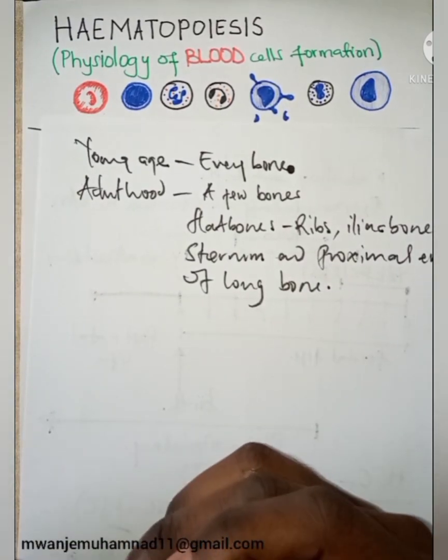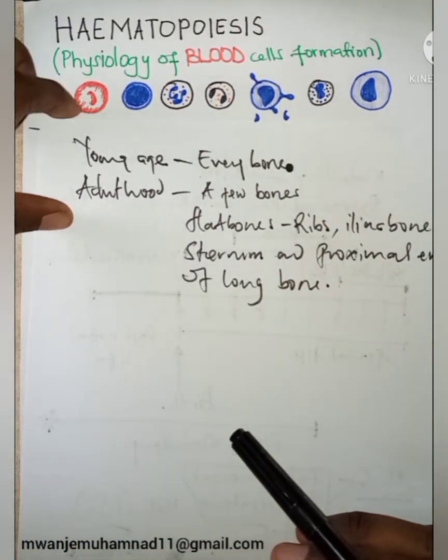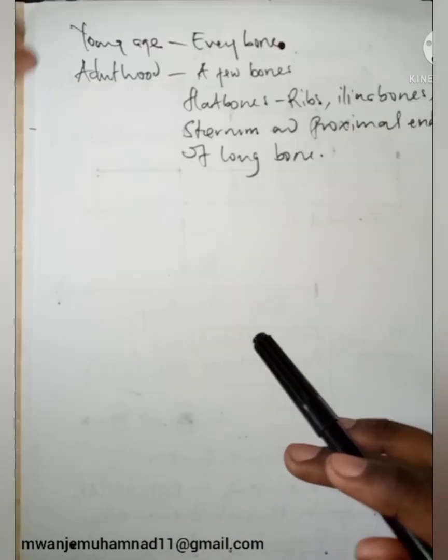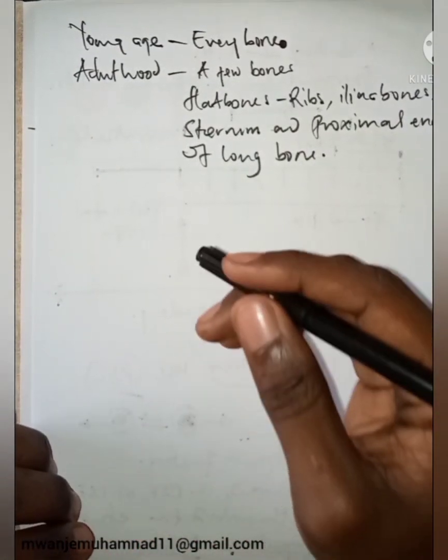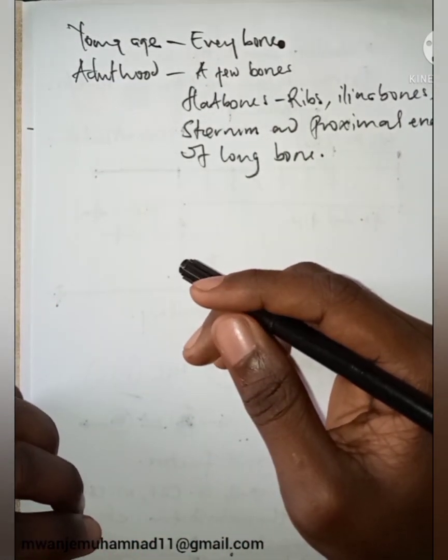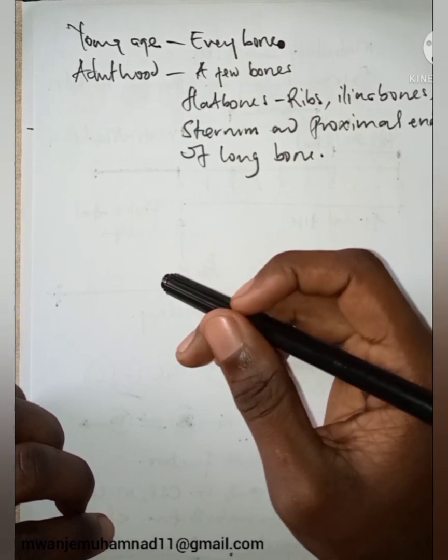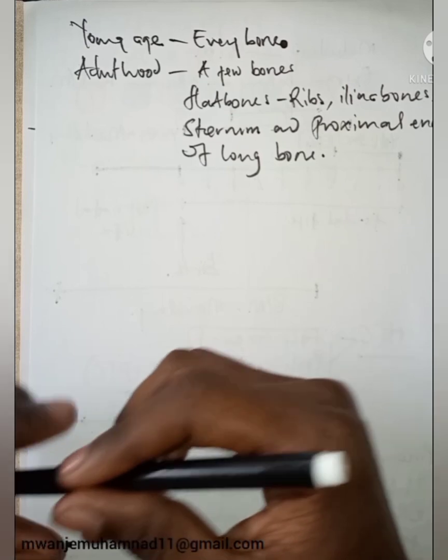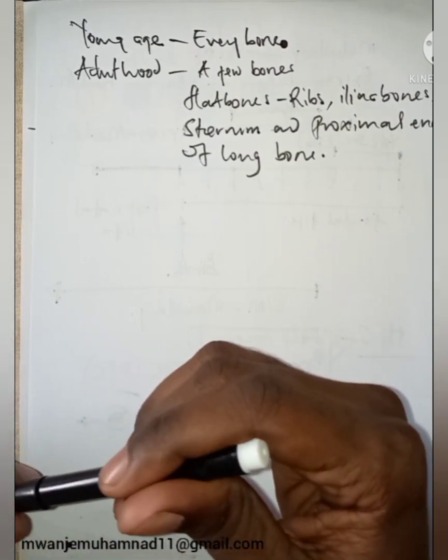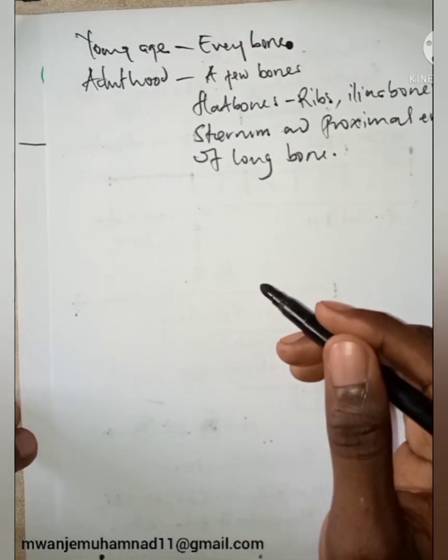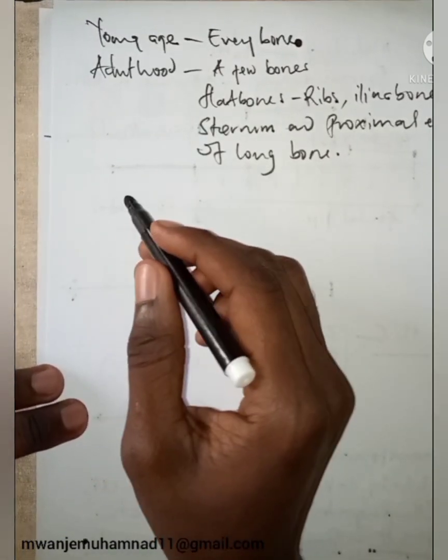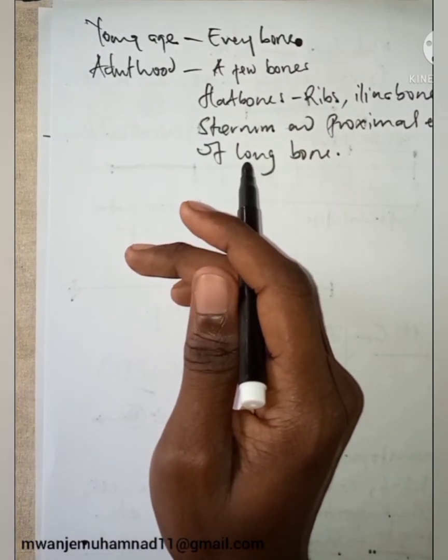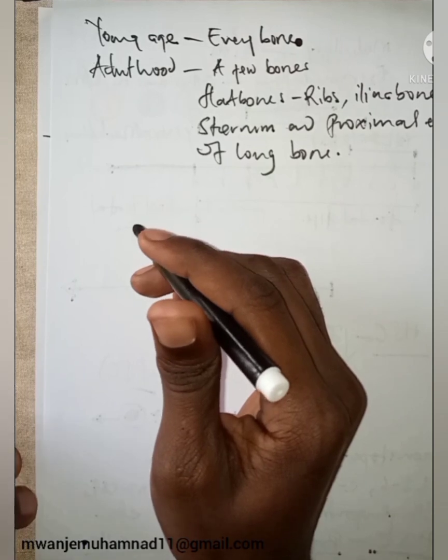This is so because as one grows, the red hematopoietic bone marrow gets converted into yellow non-hematopoietic marrow, and this cannot produce blood cells. So I think even this is why our great scholars came up with this formula when you're examining a bone marrow specimen.